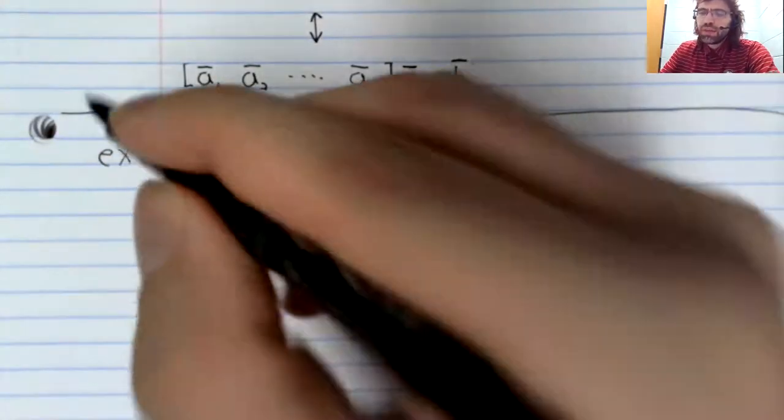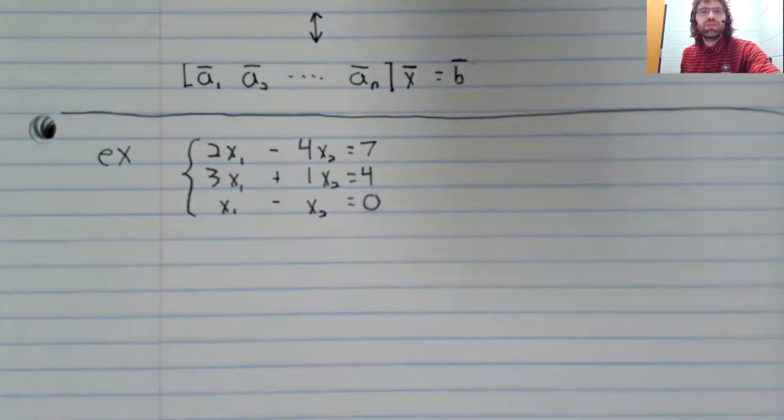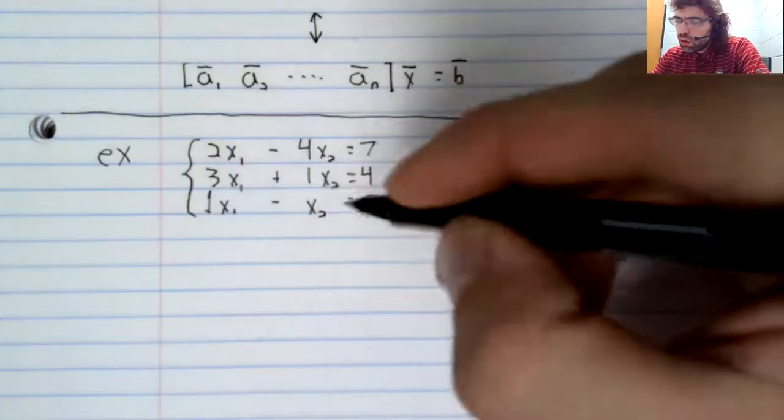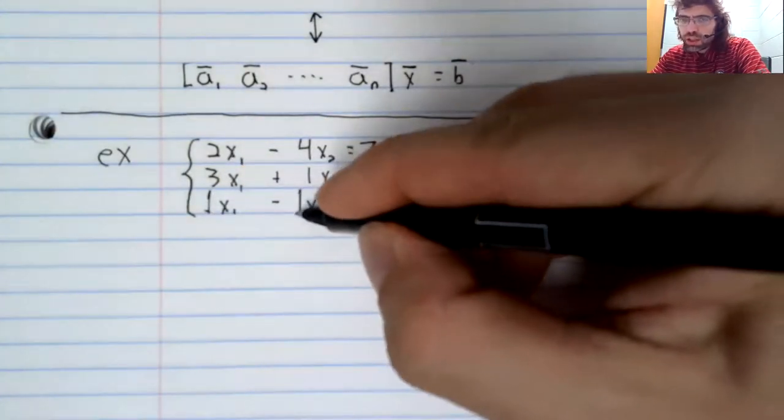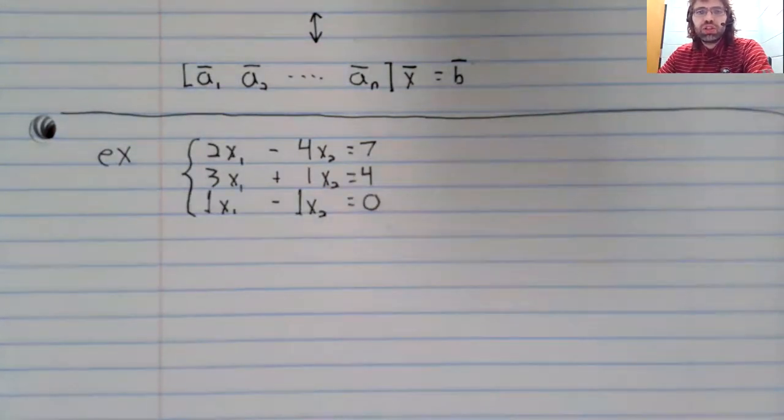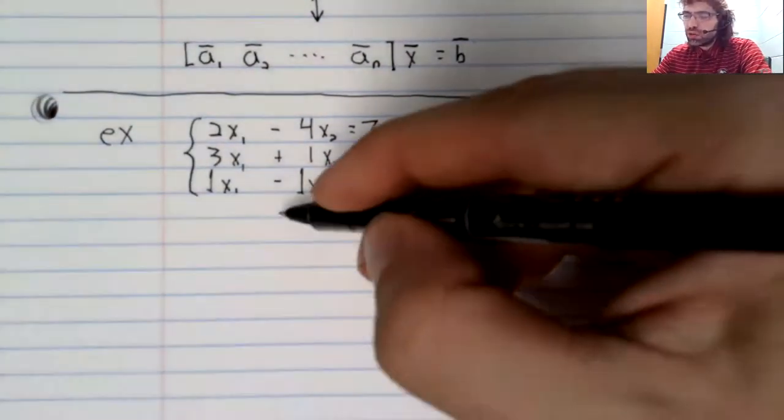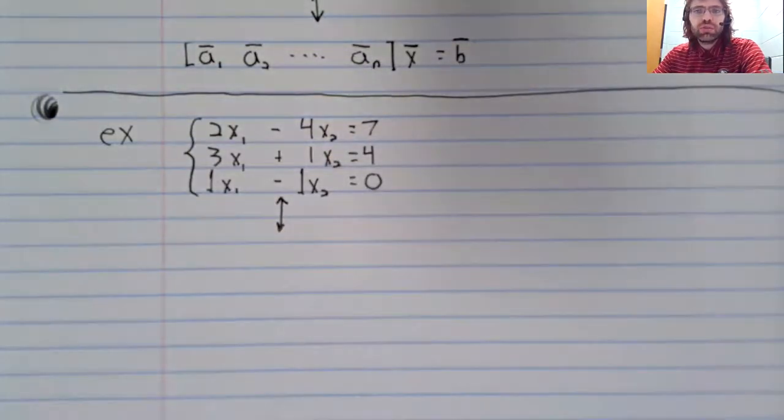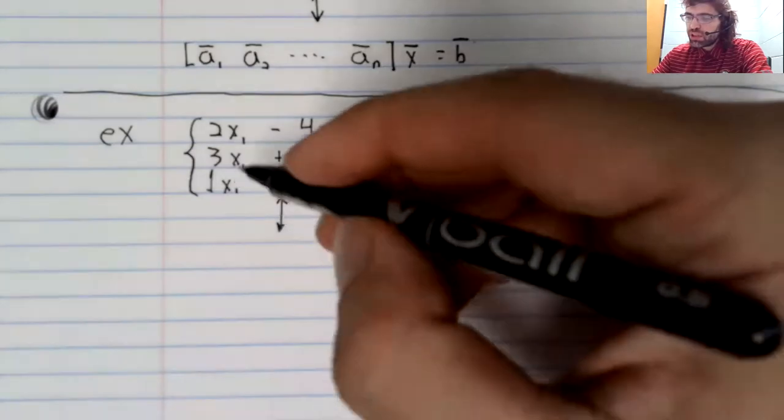Say we have the system of linear equations. We're not going to solve it or anything like that. We're just going to make the observation that this system of linear equations has the same solution set as a vector equation.